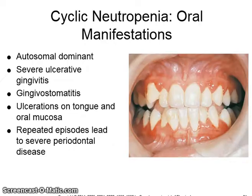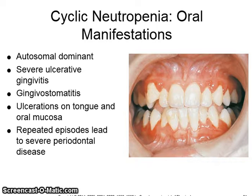Cyclic neutropenia. The oral manifestations are severe ulcerative gingivitis, gingivostomatitis, ulcerations on the tongue and oral mucosa, and repeated episodes lead to severe periodontal disease.